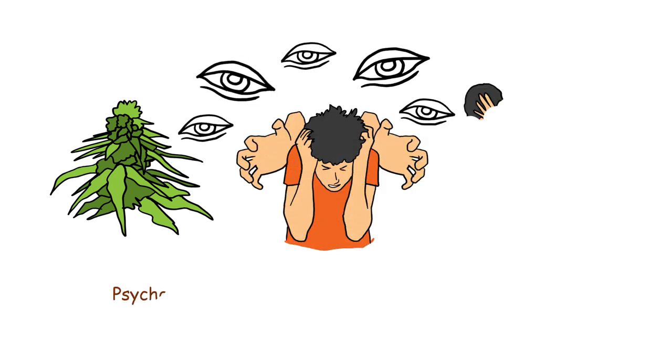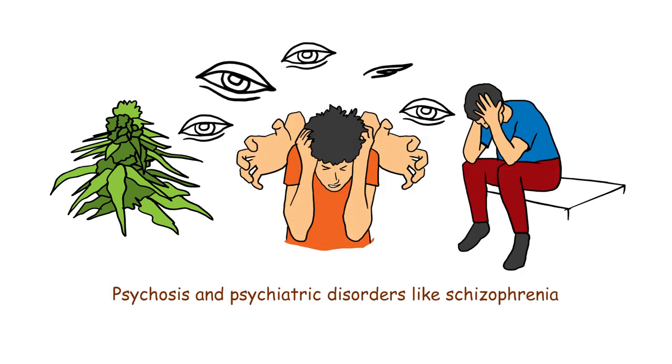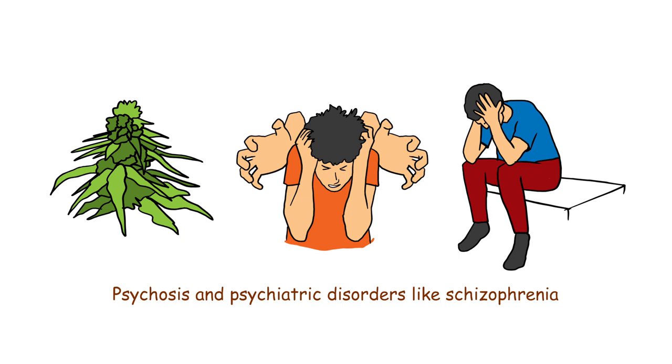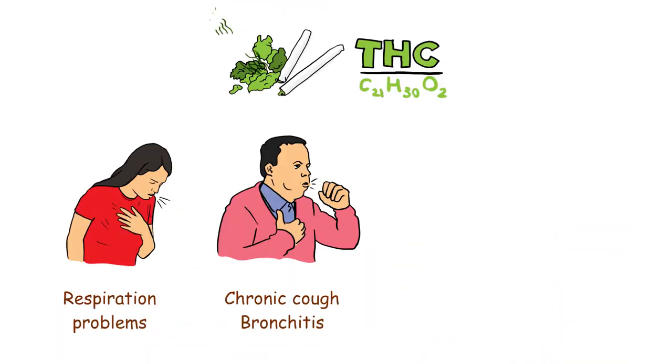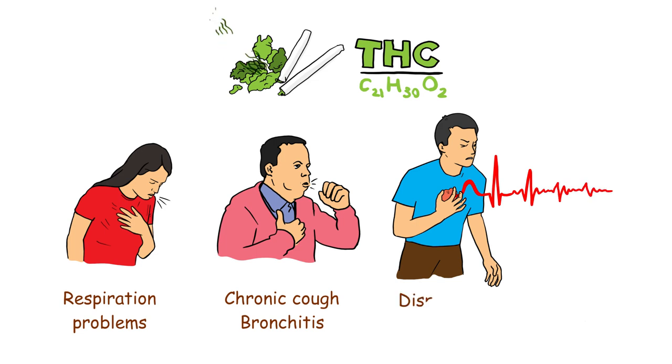There are also links between marijuana use and the onset of psychosis and psychiatric disorders like schizophrenia in those who are genetically vulnerable. Breathing and respiration problems, chronic cough, and bronchitis are additional possible consequences of chronic marijuana smoking. Marijuana use can also disrupt heart rhythm and normal cardiac functions.